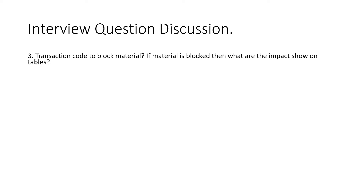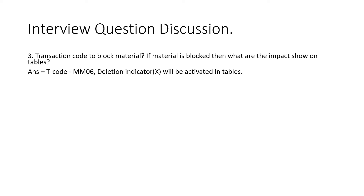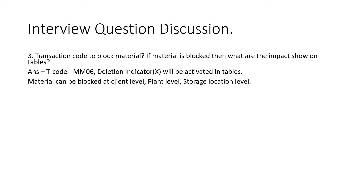The next question is: what is the transaction code to block a material, and what are the impacts we can see on the tables? The transaction code to block a material is MM06. The implication on the table is that the deletion indicator will be set to 'X', which you can see on the table for that material.